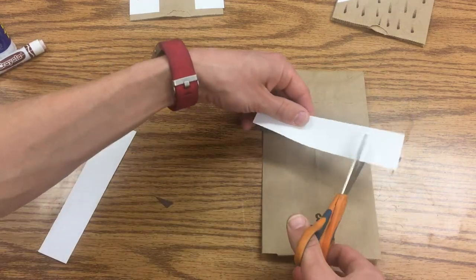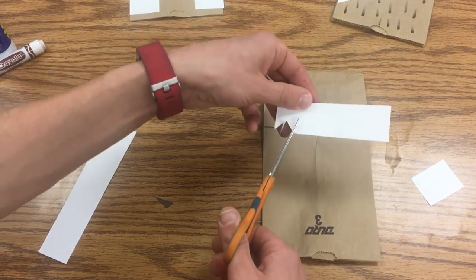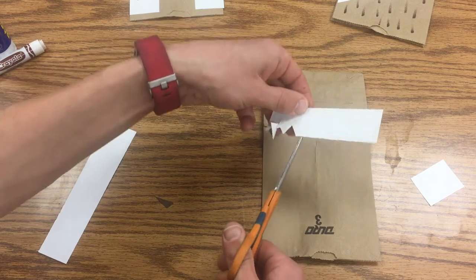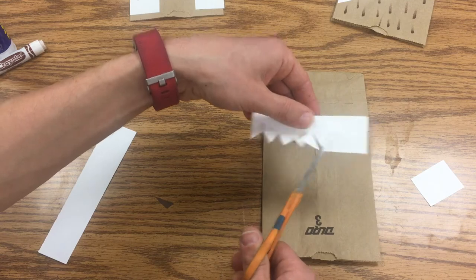I'm just gonna kind of trim the edge of it off and then I'm gonna come in and just make these triangular marks. I want to leave some space here. They can be real jagged or you can make them even, it's up to you.